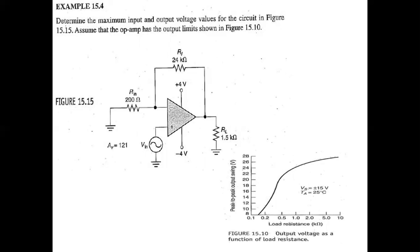In the next example, we have to find out maximum input and output voltages for a given circuit. We have an output limit graph for the op-amp. Looking at this graph, maximum output voltage at 10kΩ load is 26V peak-to-peak. With a voltage gain of 121, we can find the output from this reference.